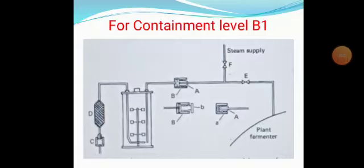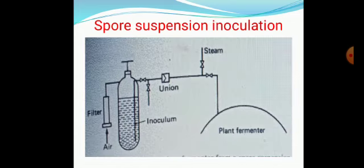In the previous presentation we were at the point of how aseptic inoculation can be done by following good industrial large scale practice, that is containment level B1. Now, the next topic is spore suspension inoculation.